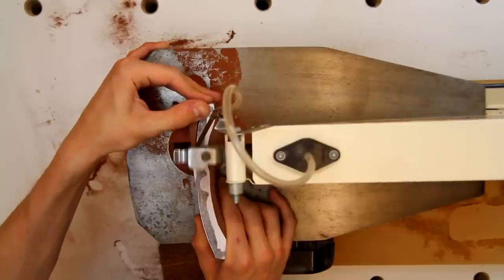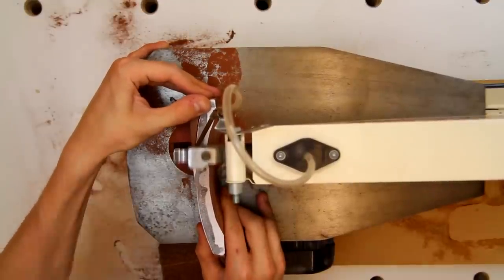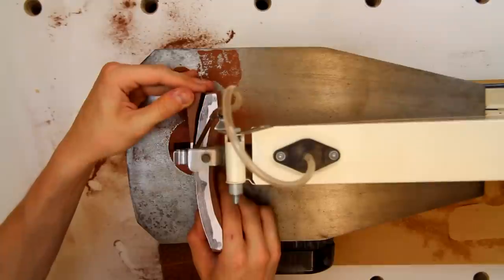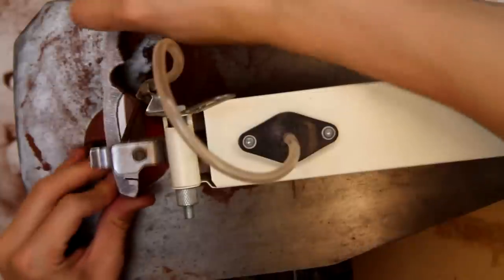I'm using the scroll saw to cut out the parts for the sunglasses out of what I believe is Australian red cedar, which should come up really nicely when the sunglasses are finished.